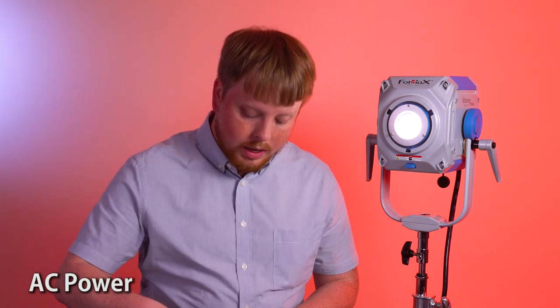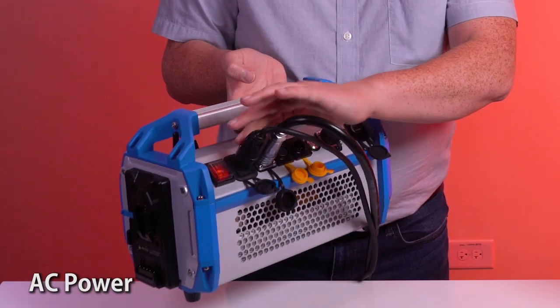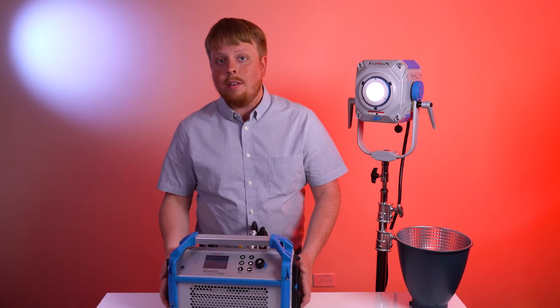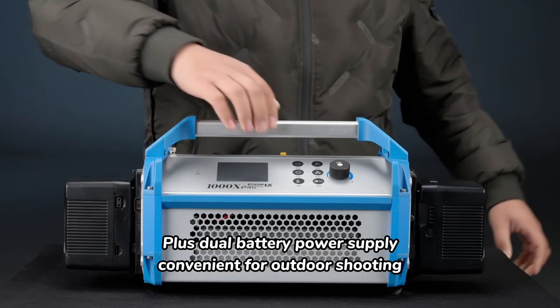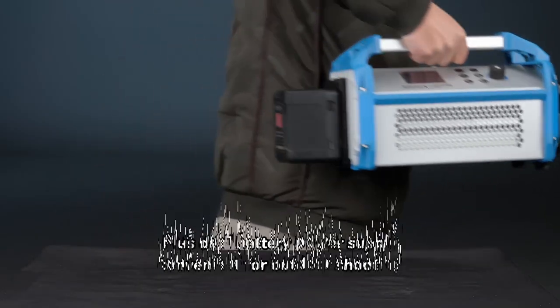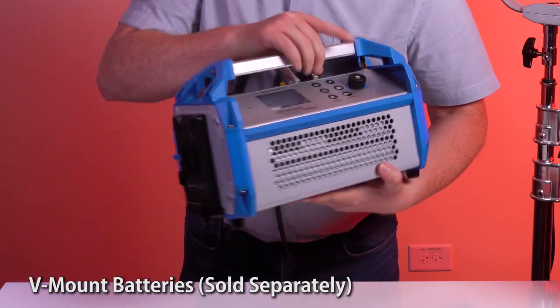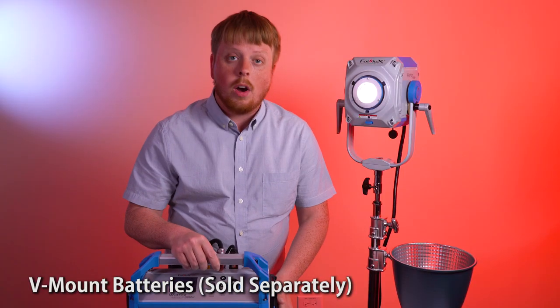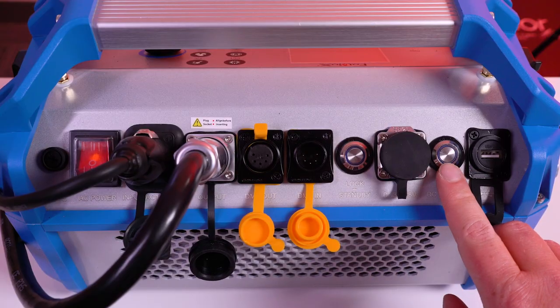Now you run the Warrior 1000 XR off a common AC outlet. You've got the plug-in for the power right here. But if you're on location and you don't have AC power, you can also run the light off two V-lock batteries. The V-lock mounts are located here and here, and you toggle between AC and V-lock with this button here.